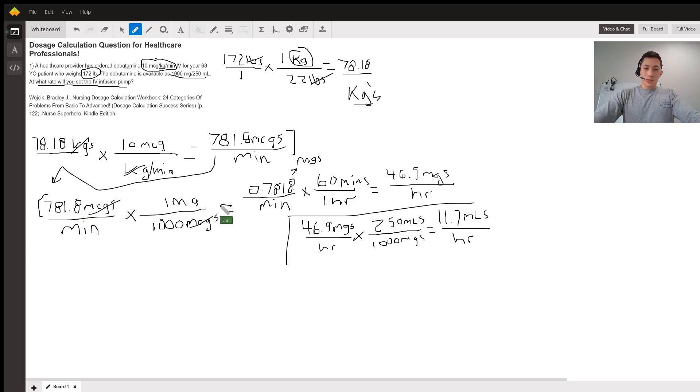We're left with 0.7818 milligrams per minute. Now we convert minutes into hours by multiplying by 60 minutes per hour. We cross out minutes. What we're left with is 46.9 milligrams per hour—that's 0.7818 times 60.